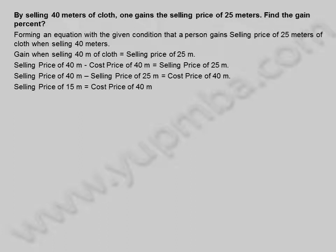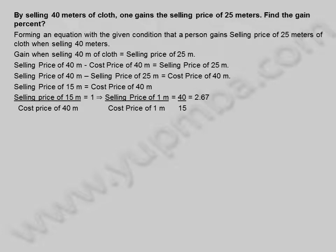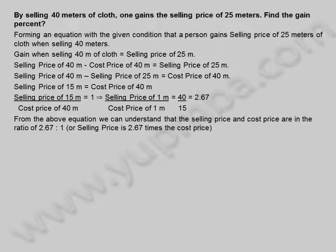Selling price of 15 meters is equal to cost price of 40 meters. Selling price of 15 meters divided by cost price of 40 meters is equal to 1, which implies selling price of 1 meter divided by cost price of 1 meter is equal to 40 by 15, which equals 2.67. From the above equation, the selling price and cost price are in the ratio of 2.67:1, or selling price is 2.67 times the cost price.